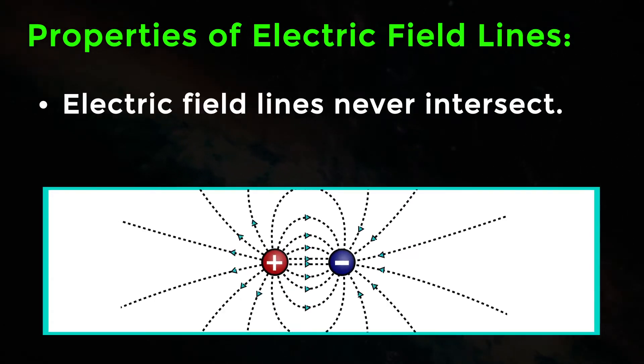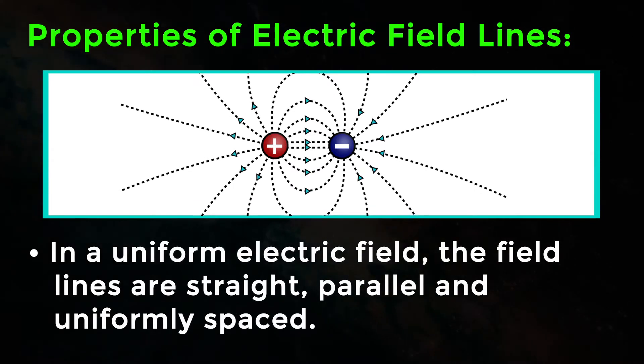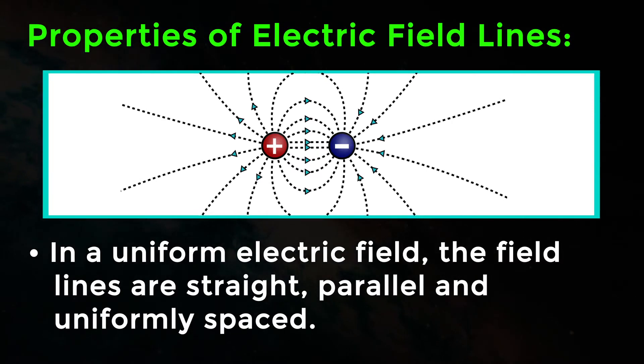Electric field lines never intersect. In a uniform electric field, the field lines are straight, parallel and uniformly spaced.